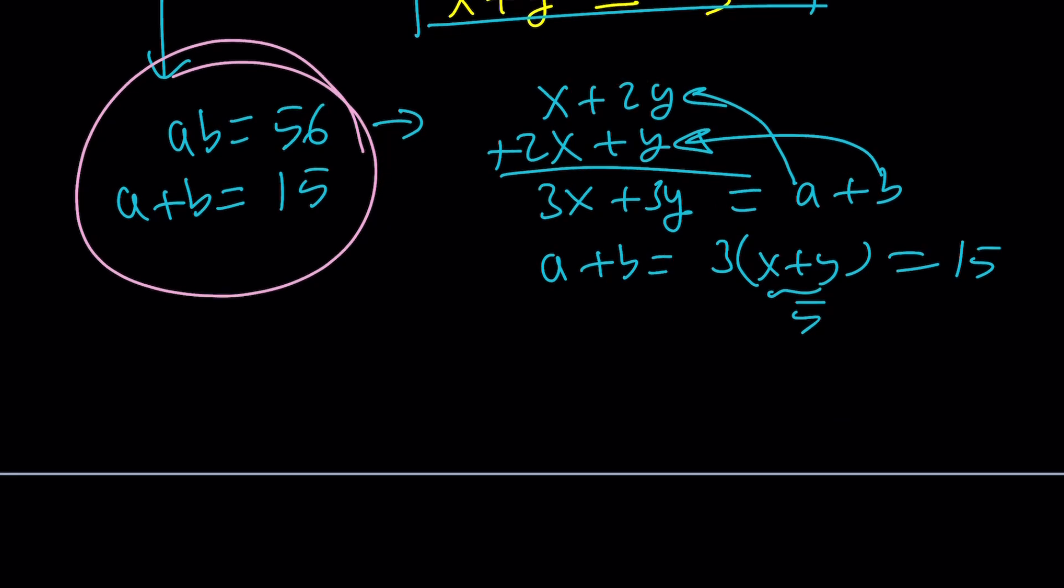We can solve it by Vieta or guess and check. Find two numbers whose product is 56 and whose sum is 15. So a equals 8, b equals 7, very easy to guess, or vice versa.